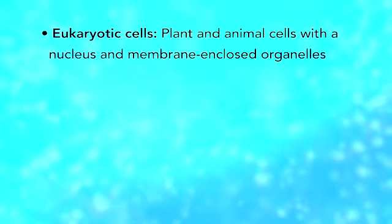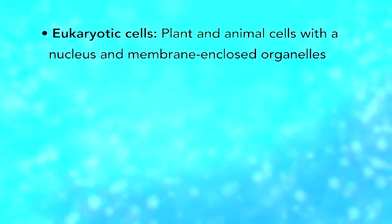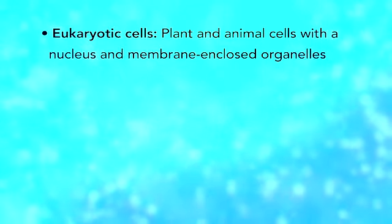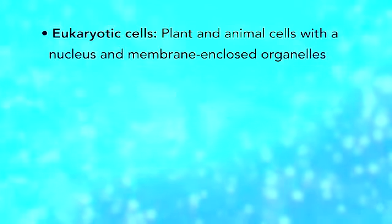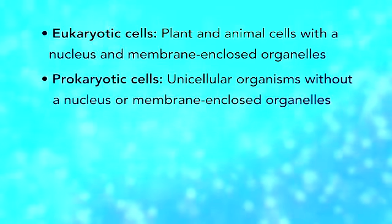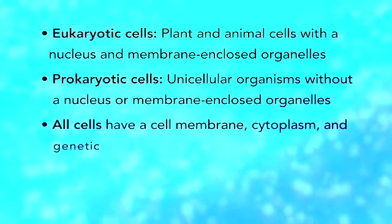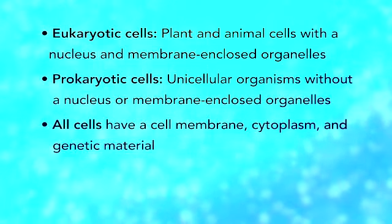In summary, remember, eukaryotic cells are plant and animal cells with a nucleus and membrane-enclosed organelles, while prokaryotic cells are unicellular organisms without these things. All cells have a cell membrane, cytoplasm, and genetic material.